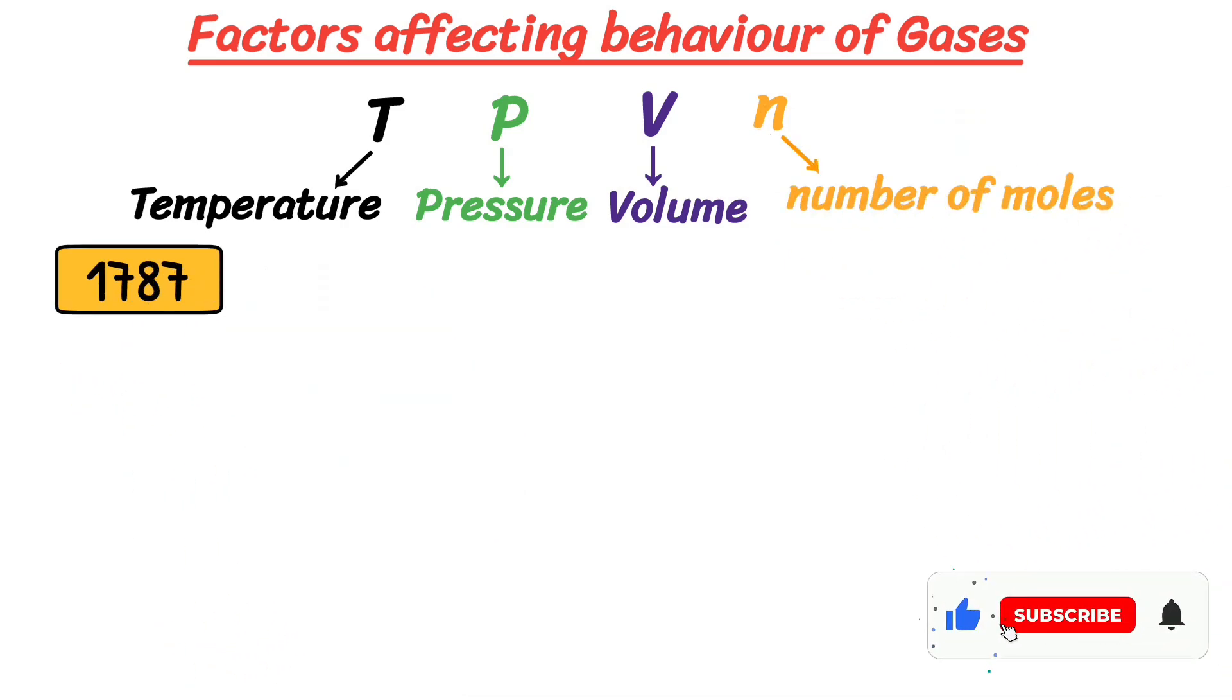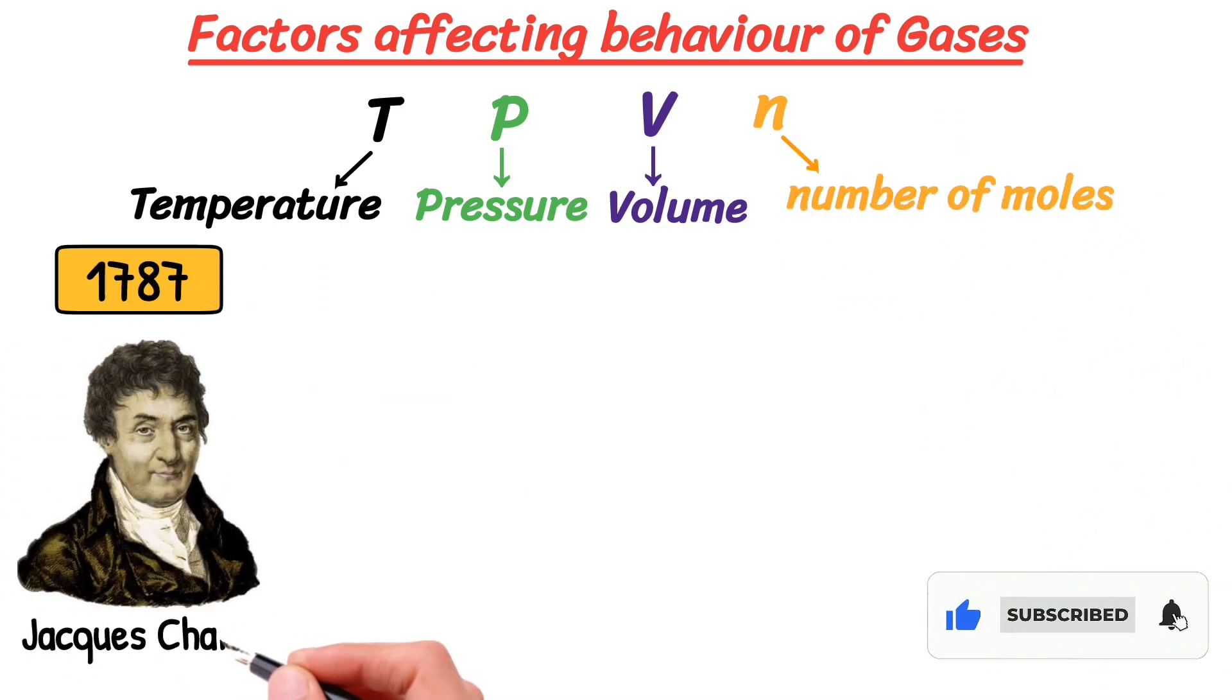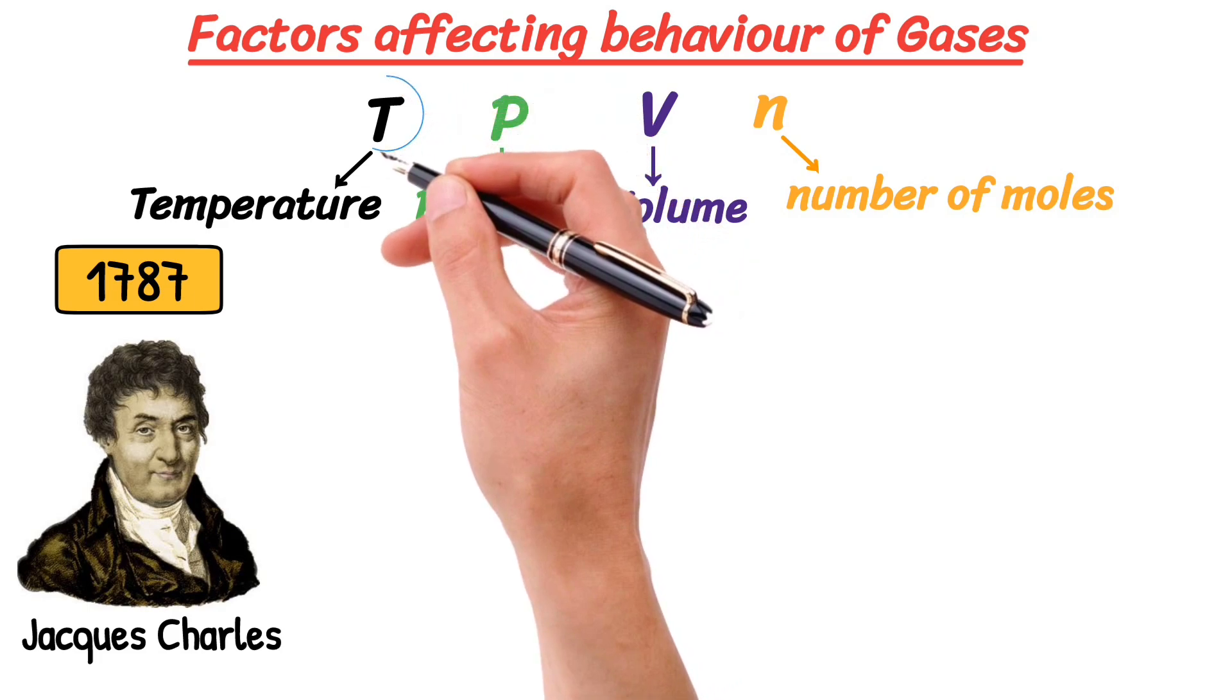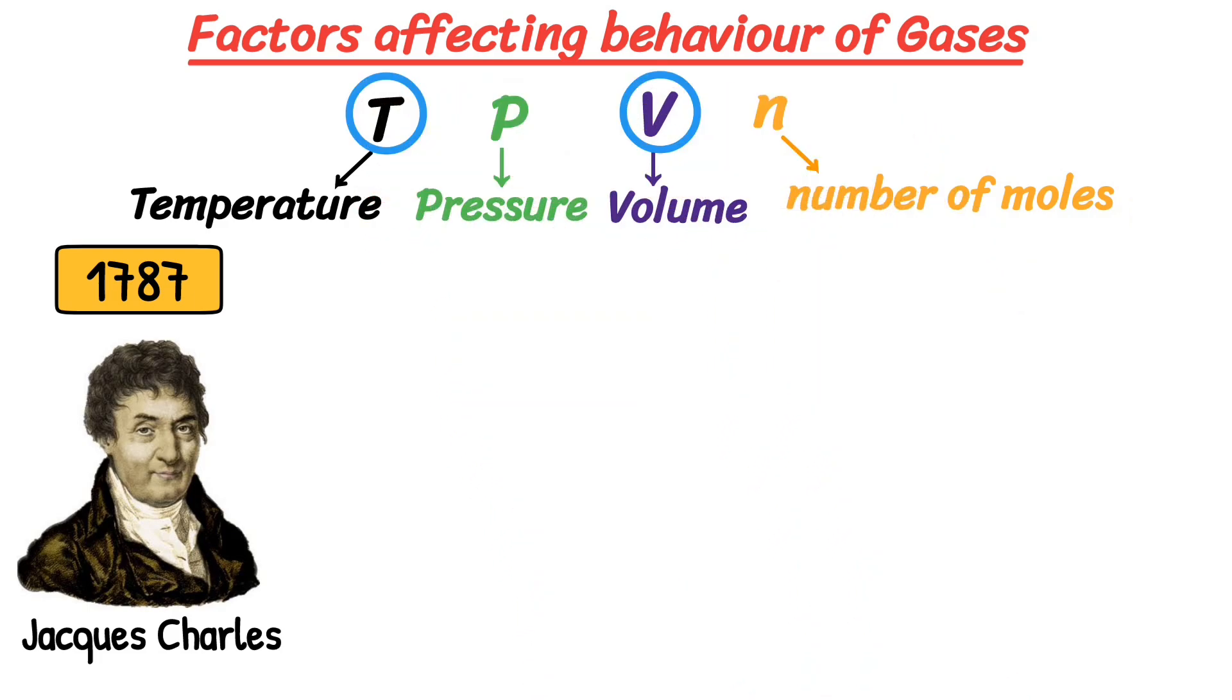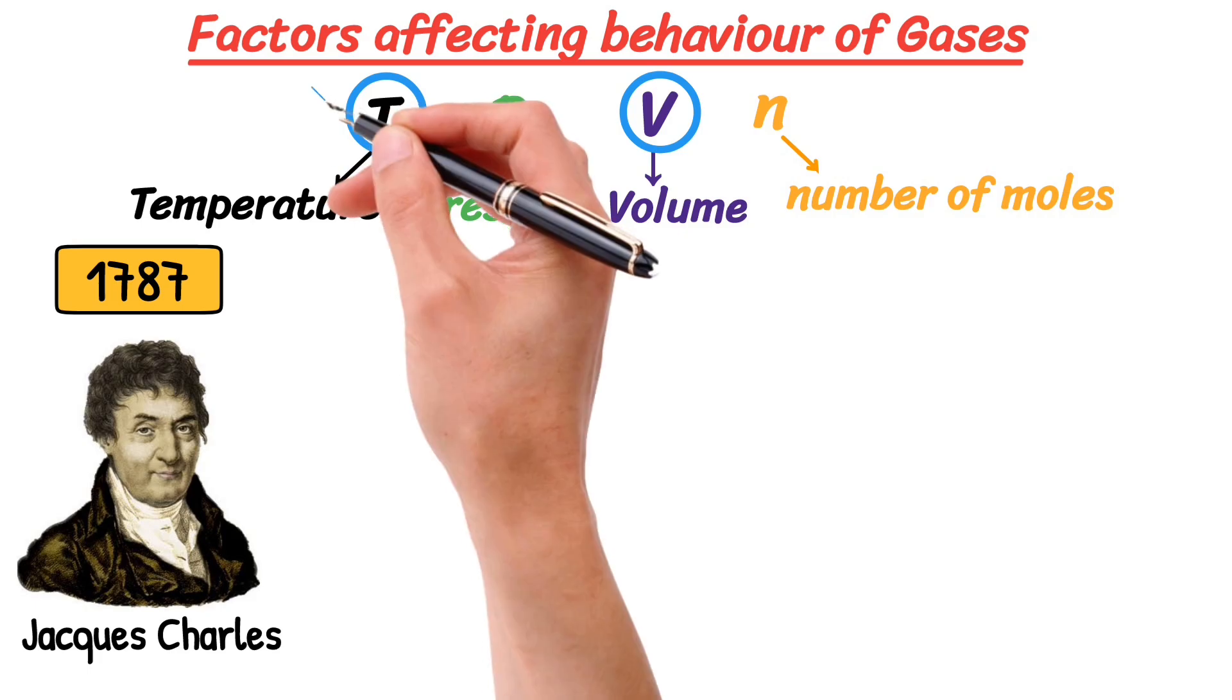In 1787, Jacques Charles studied the relationship between the temperature and volume of a gas at a constant pressure. He explains how gases behave when they are heated or cooled.